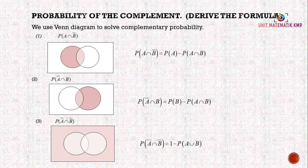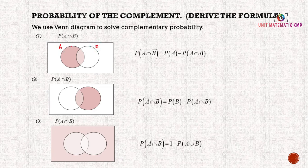Probability of the complement — deriving the formula using a Venn diagram. For the first case, we have P(A intersect B̄), meaning A intersect everything outside B. To find this probability of the shaded region, we take P(A) minus P(A intersect B).